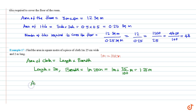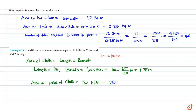Therefore, area of the piece of cloth equals 2 into 1.25, equal to 2.50 square meters. These are our answers.